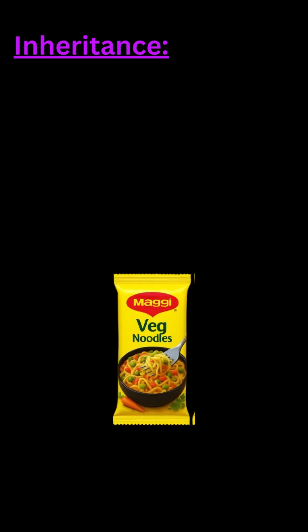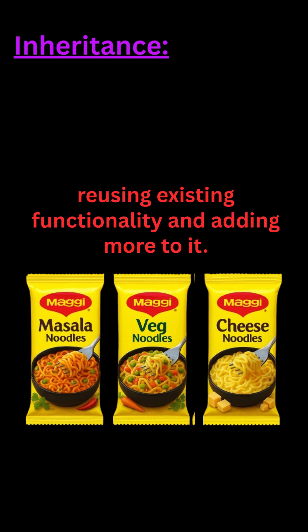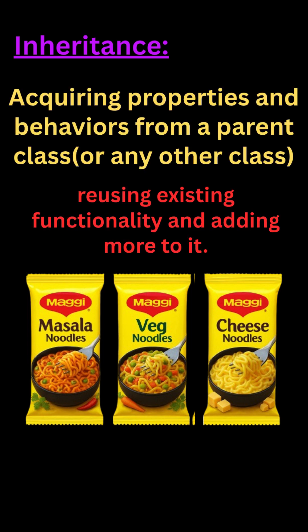Next, we have different types — you can use the same Maggi packet in veg, masala, or cheese flavors. Just like different flavors extend the same base noodles with extra ingredients, getting properties and behavior from a parent class or any other class is called Inheritance.